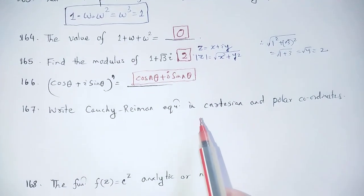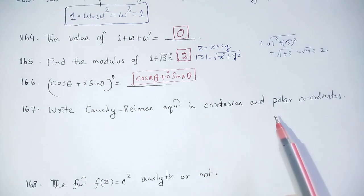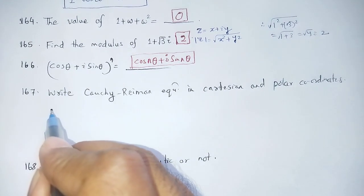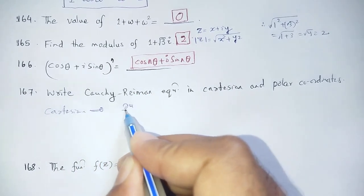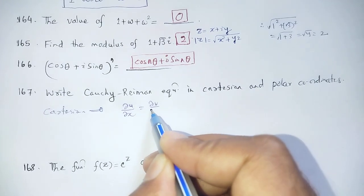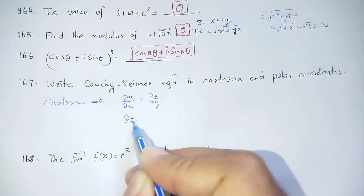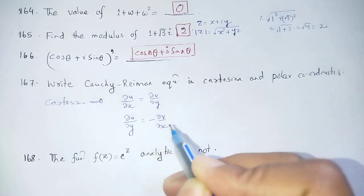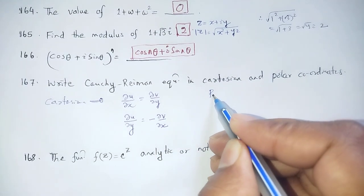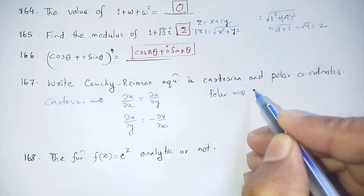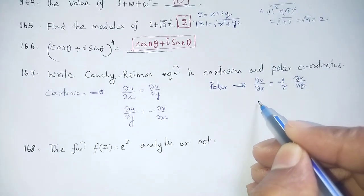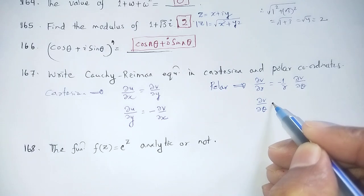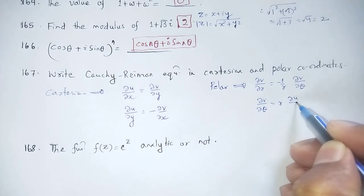Write the Cauchy-Riemann equations in Cartesian and polar coordinates. In Cartesian coordinates: ∂u/∂x = ∂v/∂y and ∂u/∂y = −∂v/∂x. In polar coordinates: ∂u/∂r = (1/r)∂v/∂θ and ∂v/∂r = −(1/r)∂u/∂θ.